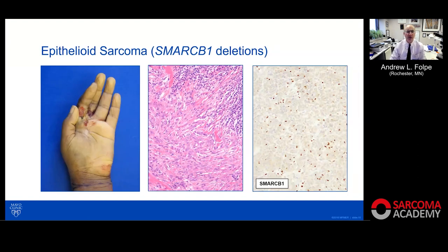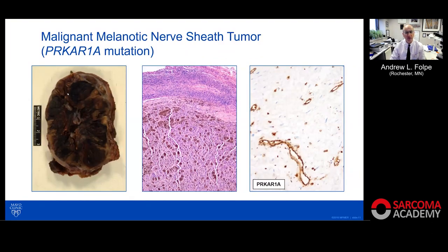We can also do other types of molecular testing with immunohistochemistry. Epithelial sarcoma often presents as ulcerated or indurated lesions of the distal extremities. At the genetic level it shows SMARCB1 deletion, and we can demonstrate complete loss of SMARCB1 protein as an immunohistochemical surrogate. Malignant melanotic nerve sheath tumor — also known as melanotic schwannoma — is a malignant tumor where the differential often includes melanoma. Being Carney complex-related, these tumors show loss of PRKAR1A expression, helping distinguish them from melanoma.